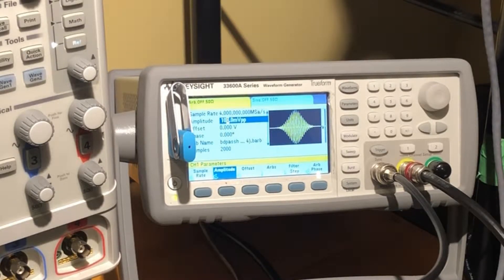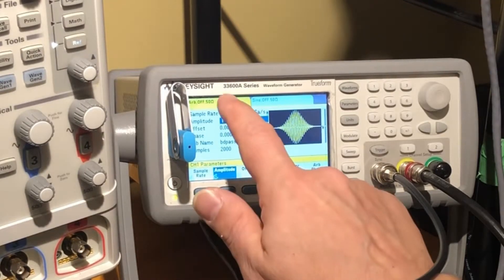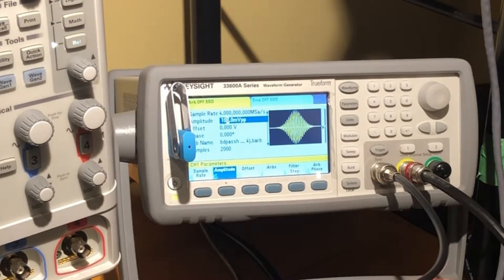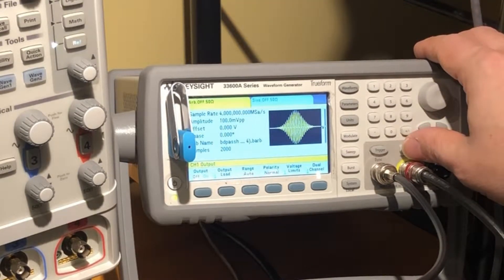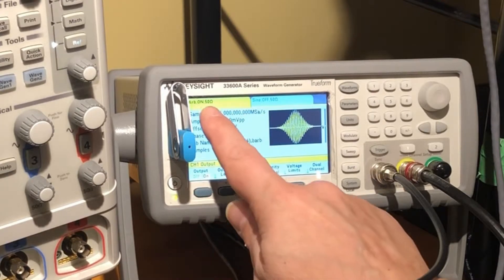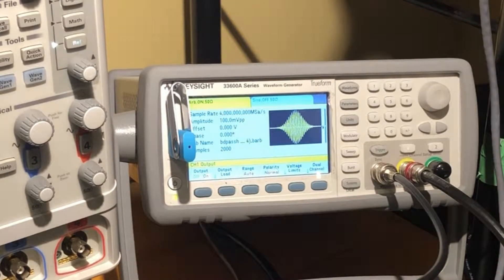And that's it, should be generating. Oh it says arb off, so we also have to go to waveforms. We want to get the output going, the channel output is off. We want to turn it on, driving it into 50 ohms.